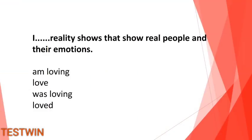Next question: "I ___ reality shows that show real people and their emotions." The answer is Option 2: love. So: I love reality shows that show real people and their emotions. Looking at option 1, "am loving" — love is a stative verb and is not used in continuous form in English.